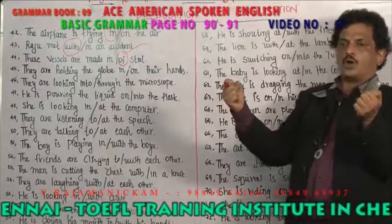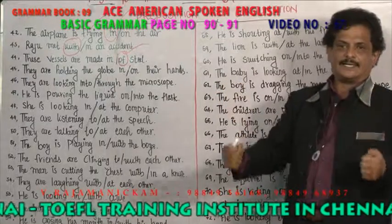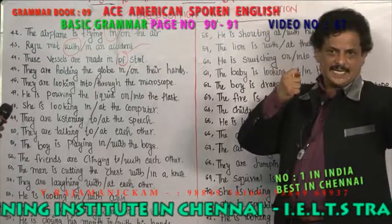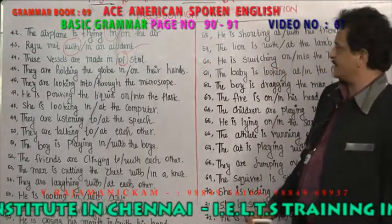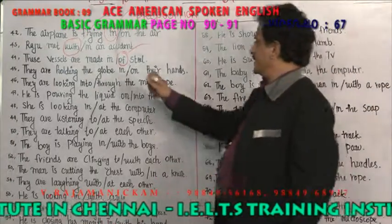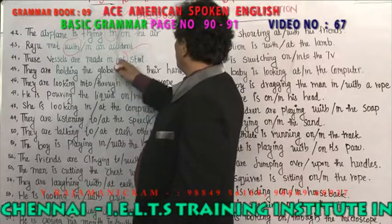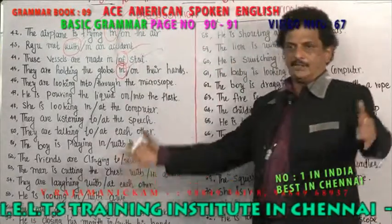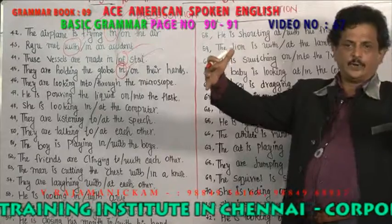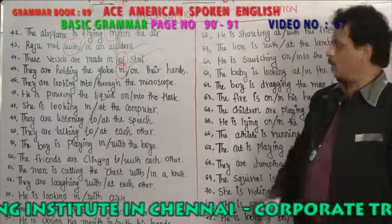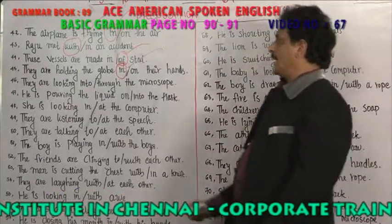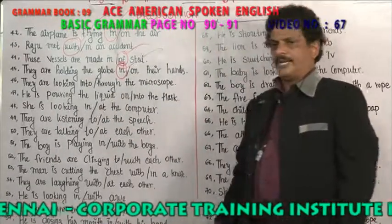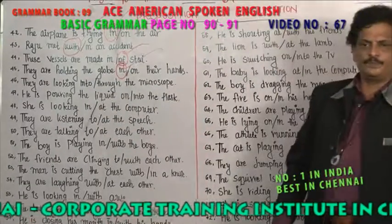They are holding the globe in their hands or on their hands? It is 'in their hands.' Why do you use 'in' and not 'on'? 'In their hands' means he has made everything completely in his hold — everything is under his control.